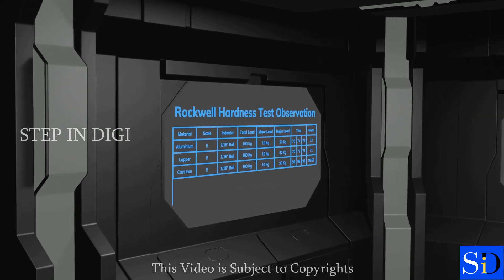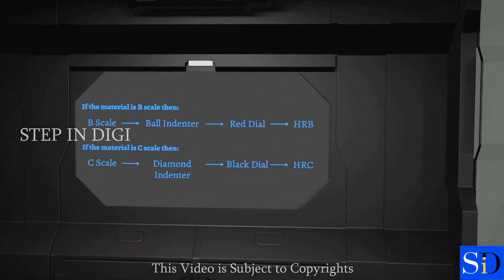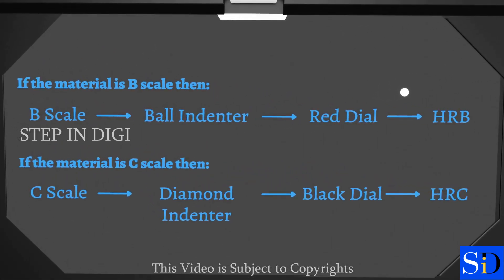Now, let us find the hardness of stainless steel using diamond indenter. For a diamond indenter, it's the C scale and the readings of the black dial has to be taken. And for ball indenter, it's the B scale and the reading of the red dial has to be considered.